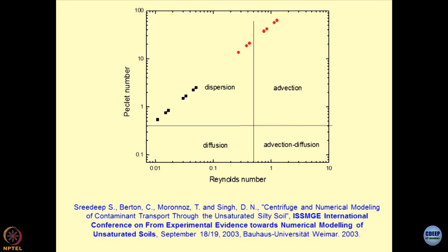We did experiments in a centrifuge and numerical modeling. What we could show is that the types of soils we normally get follow advective-dispersive phenomena. It was very difficult to create samples where diffusive and advective-diffusive contaminant transport could be achieved in the laboratory, because reconstituting samples for a given soil where the Pecklet number would be less than 0.4 is difficult. Simple experiments can be done to simulate a type of mechanism of contaminant transport — these are open topics for anyone to work on, creating either a porous media or a contaminant combination to identify which mechanism prevails.